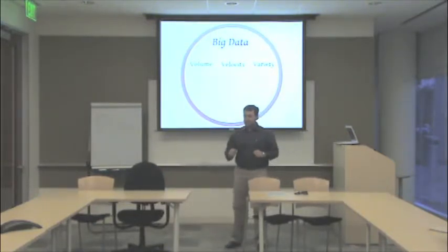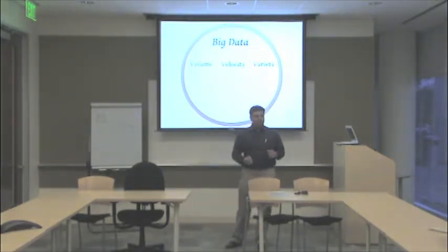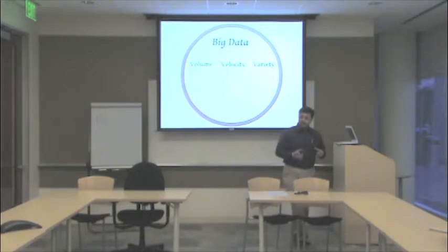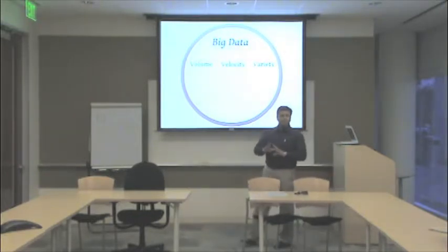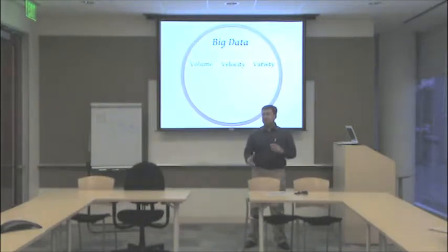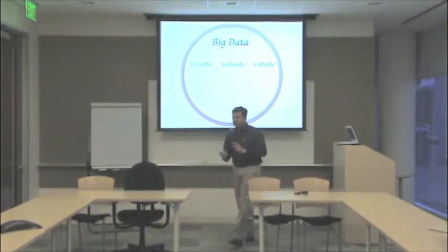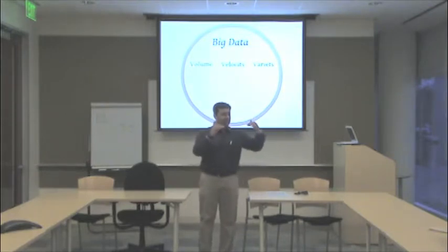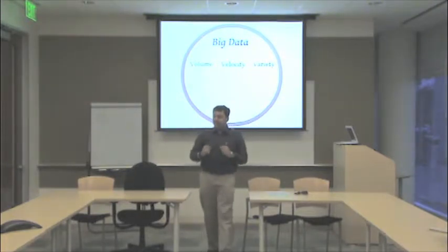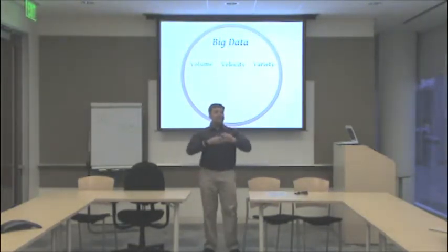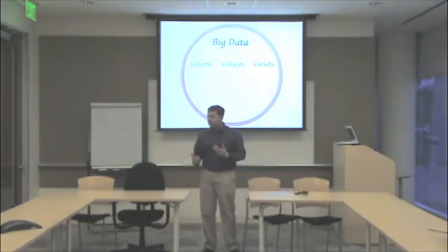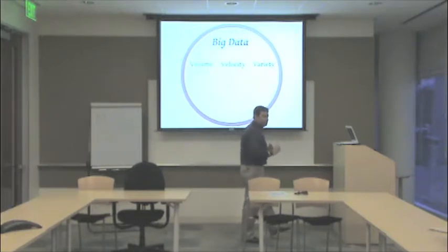Volume, we'll talk about in the next slide. Velocity — one of my friends told me that whatever data we used to generate in 24 hours, now we generate in two hours. That's the kind of velocity we're talking about. Also, Variety — there are multiple devices, multiple databases, but broadly there are two varieties: structured and unstructured. Structured is like forms with fields — first name, last name, gender. Unstructured is your Facebook comments, your Twitter tweets — there's a comment field and you enter anything there. So variety-wise, there are two broad categories: structured and unstructured.